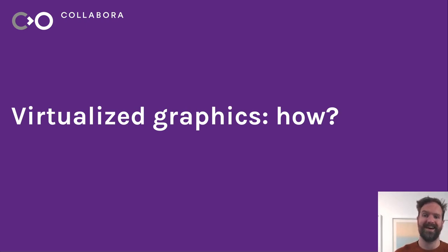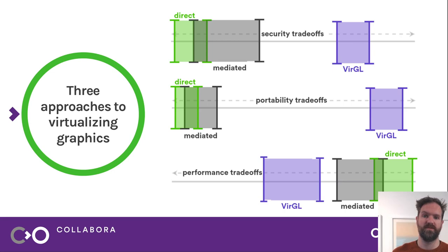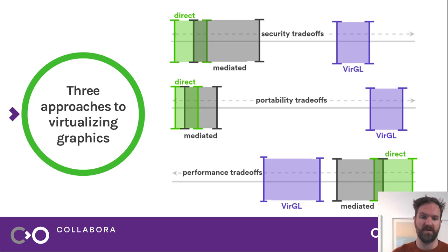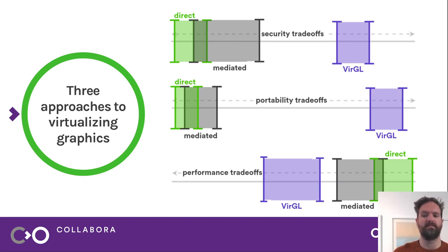So we know we need it and we know it's been done. Let's take a look at how it's been done, because there are three very distinct ways in which you can approach virtualized graphics. The tradeoffs go in three ways: there are different levels of security, different levels of portability, and different levels of performance. Each of the three approaches has different tradeoffs, and which approach will be best for you depends on how you view these tradeoffs.